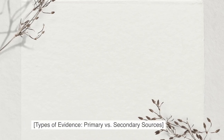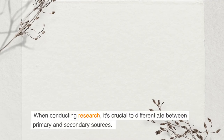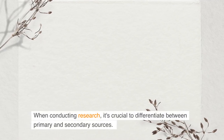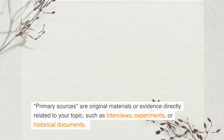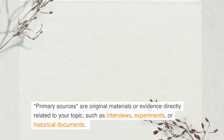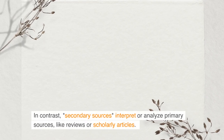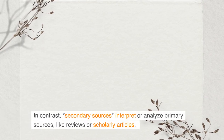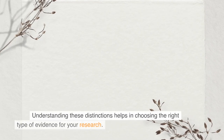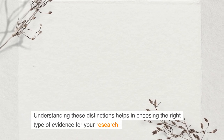Types of evidence: primary versus secondary sources. When conducting research, it's crucial to differentiate between primary and secondary sources. Primary sources are original materials or evidence directly related to your topic, such as interviews, experiments, or historical documents. In contrast, secondary sources interpret or analyze primary sources, like reviews or scholarly articles. Understanding these distinctions helps in choosing the right type of evidence for your research.